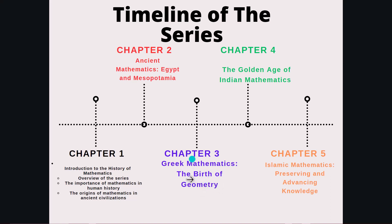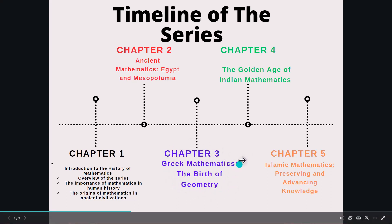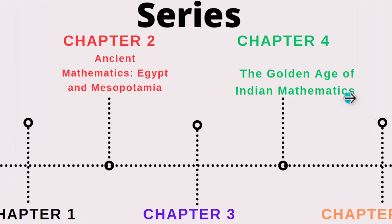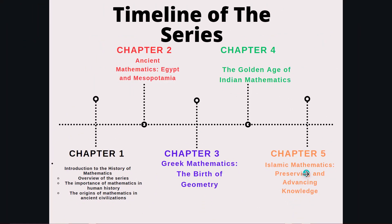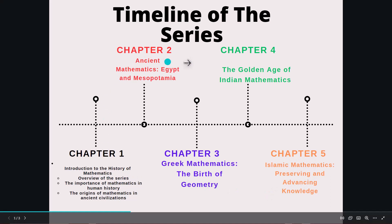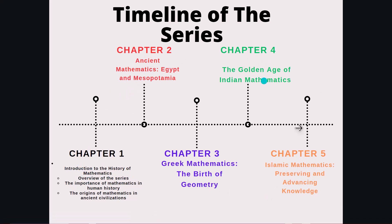We are going to talk about Euclid, the Elements, and serious important information about this time in the history of mathematics. Chapter 4 is the golden age of Indian mathematics. Chapter 5 is Islamic mathematics: preserving and advancing knowledge. Those are the titles, and I will do it one per week, every Sunday.